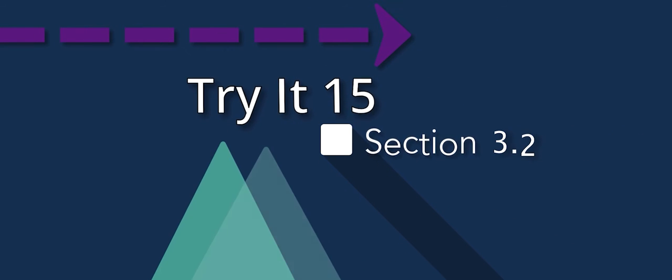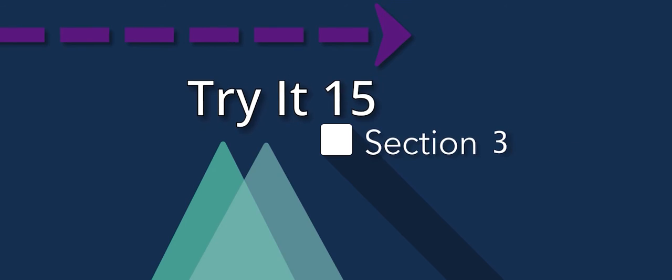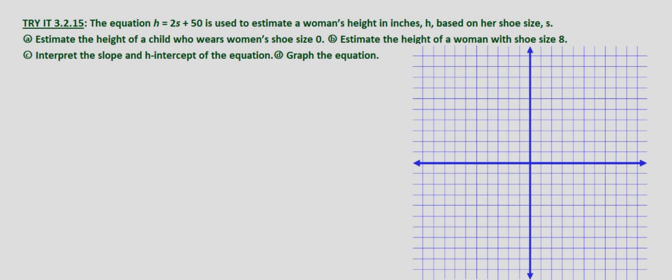In this problem we are looking at an application of slope and intercepts as well as the graph of an equation. We're given the equation h equals 2s plus 50 is used to estimate a woman's height in inches h based on her shoe size s.